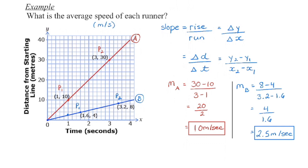On the red line, 30 minus 10 means we've covered 20 meters, 3 minus 1 in 2 seconds. If we reduce that to get the unit rate, person A is running 10 meters per second. So we can see they're going up 10 meters in 1 second, up another 10 meters in another second.